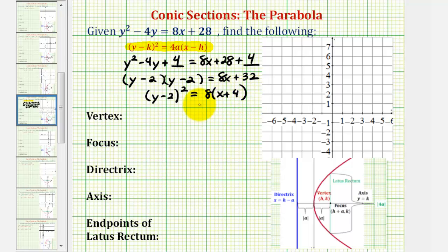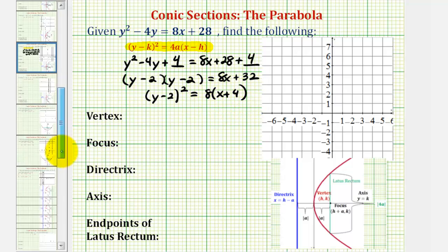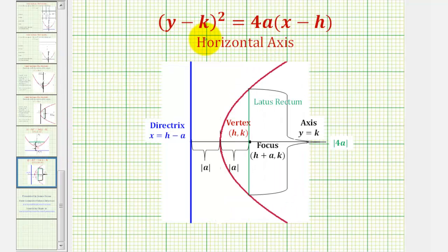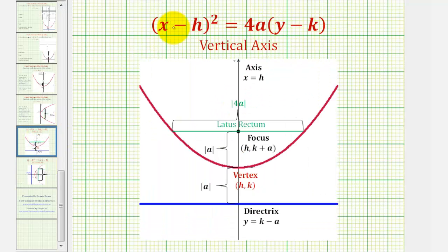We should recognize this form. Because the y part is squared, the parabola will have a horizontal axis, meaning it will open left or right based upon the sign of a. If it fit the form where the x part was squared, then we'd have a vertical axis and the parabola would open up or down.